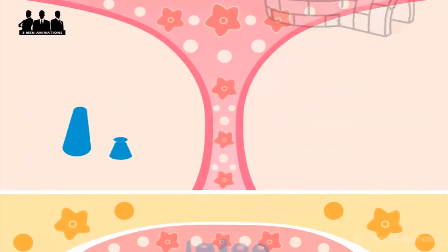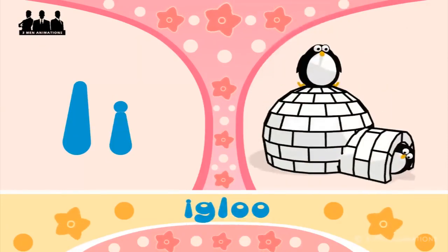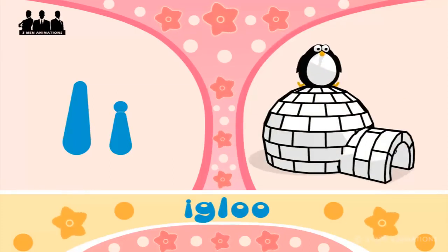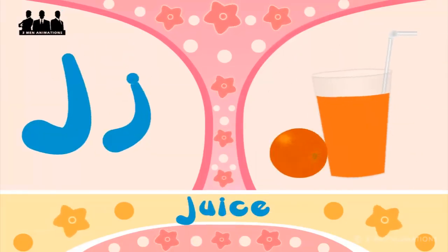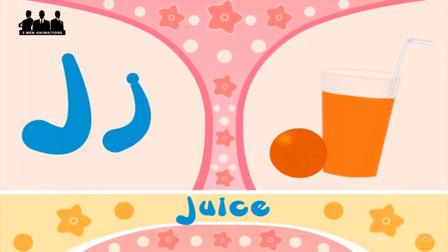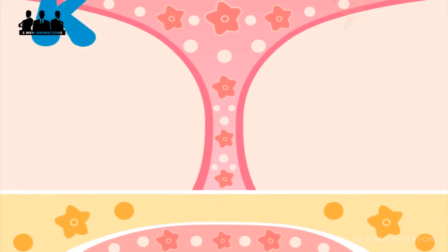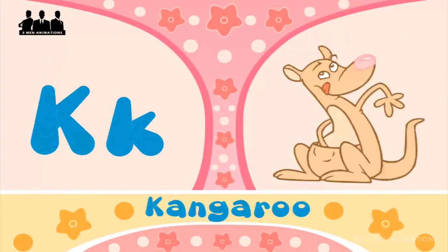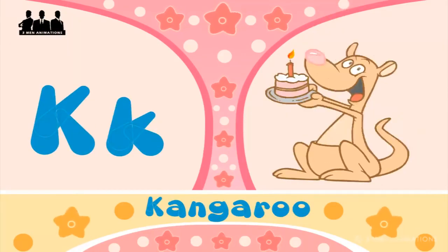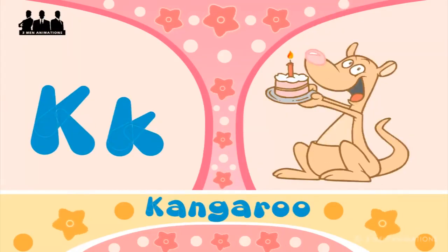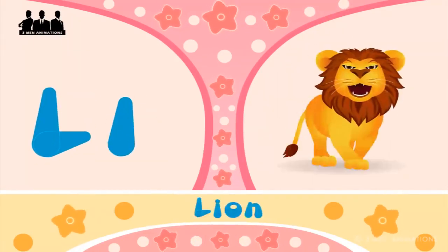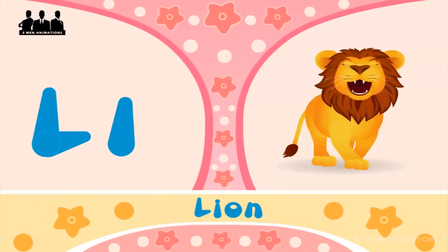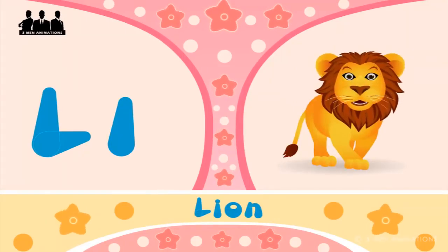I is for igloo, i-i-igloo. J is for juice, ju-ju-juice. K is for kangaroo, k-k-kangaroo. L is for lion, l-l-lion.